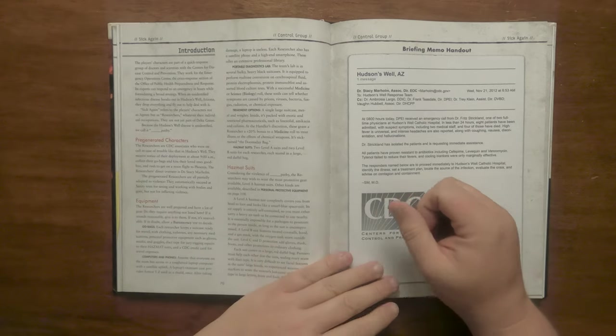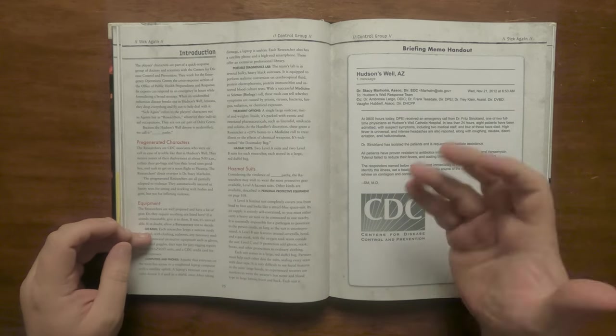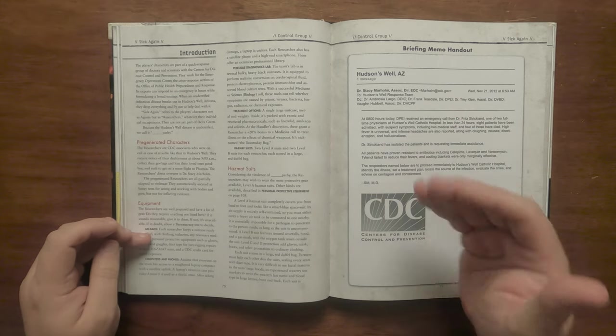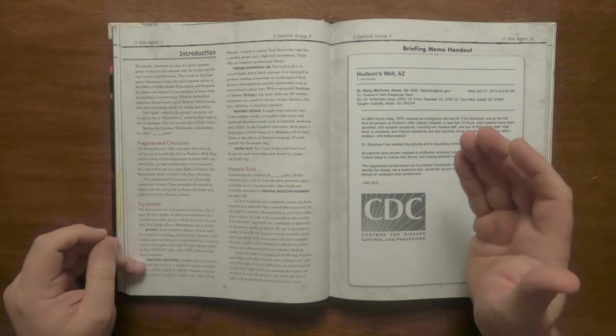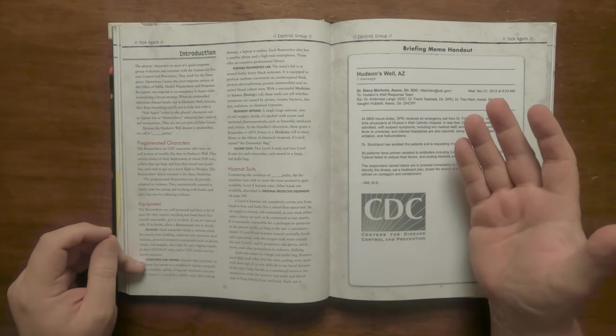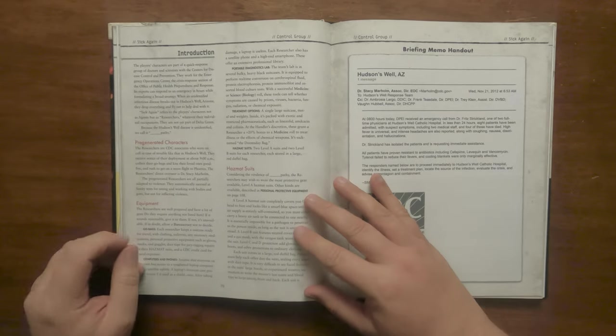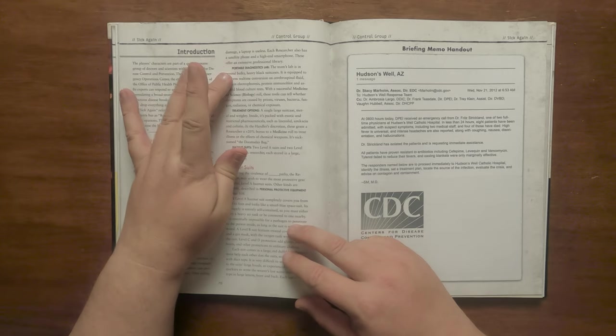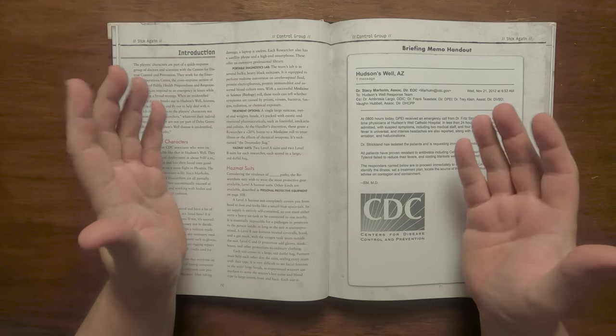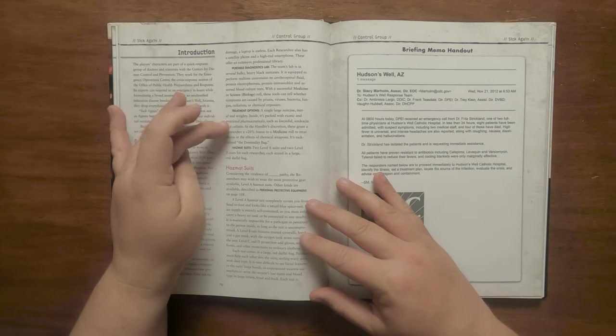It lists the equipment that each of them have. Their go bags are a suitcase with usual travel items, PPE, duct tape for repairing hazmat suits and a CDC credit card. They have a toughened laptop with satellite access that has a titanium case that can be used as a shield in a pinch as well as a sat phone and a high-end smartphone.